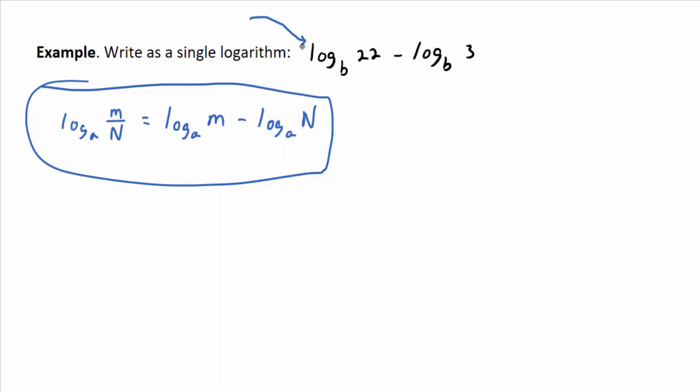Which way do you read it? Left to right or right to left? To make a single logarithm, you read the rule from right to left. And you can think of the 22 as acting like what? M and 3 is acting like N.